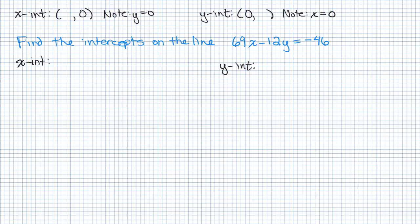All right, so let's find the intercepts on the line 69x - 12y = -46. Well, if we're trying to find the x-intercept, keep in mind, we know that for the x-intercept, it's in the form (something, 0), so y must be 0. So we already know what the y-coordinate is. And for the y-intercept, we know the x-coordinate has to be 0.